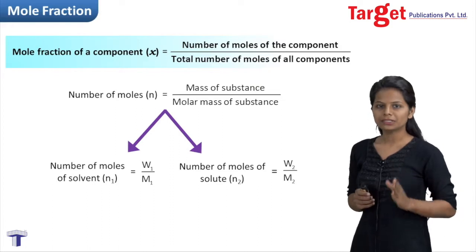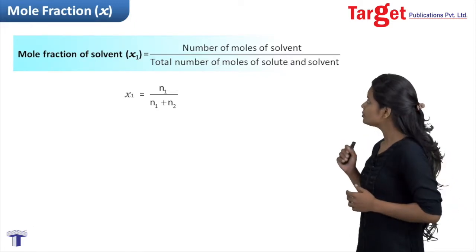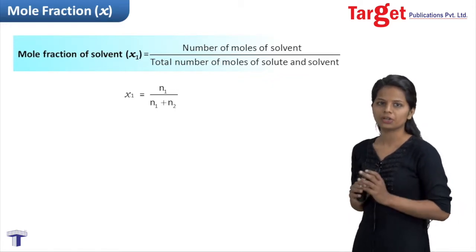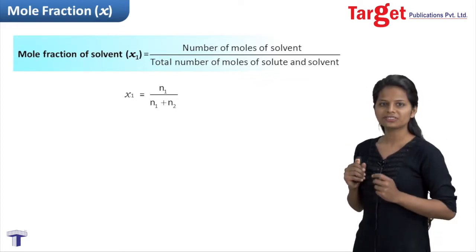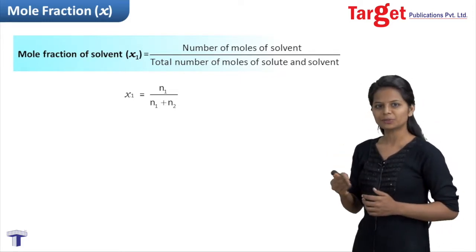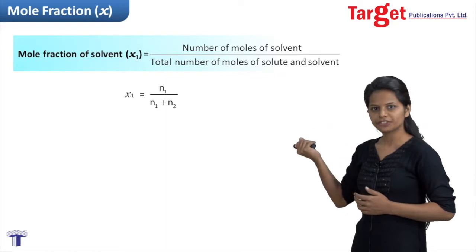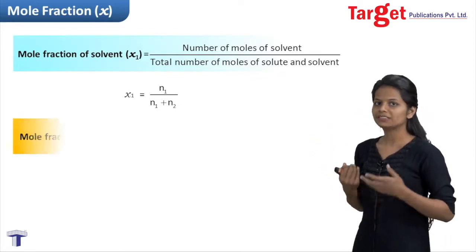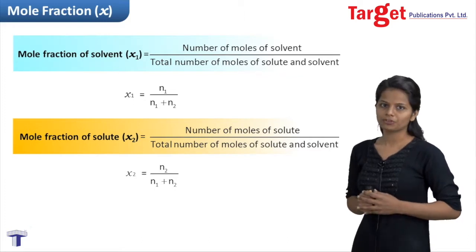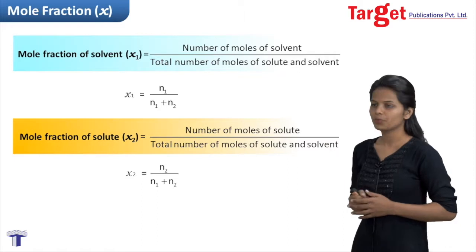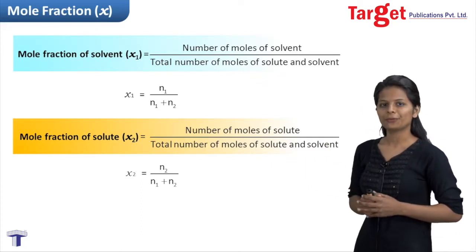Mole fraction of solvent, x1, is equal to number of moles of solvent divided by total number of moles of solute and solvent. Since this is a binary solution with only one solute and one solvent, the total number of moles equals N1 plus N2. So x1 equals N1 divided by N1 plus N2. Similarly, mole fraction of solute, x2, equals N2 divided by N1 plus N2.